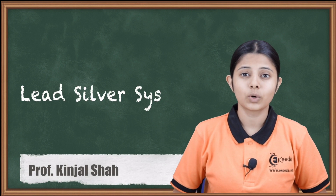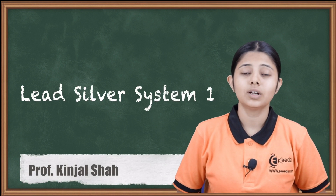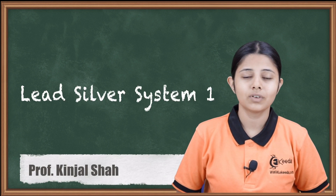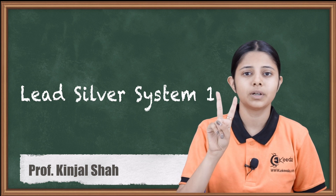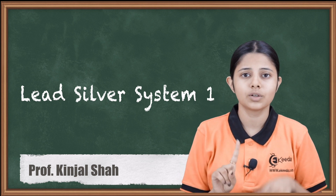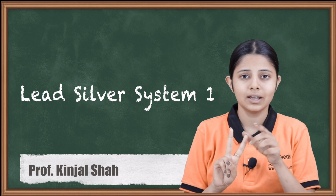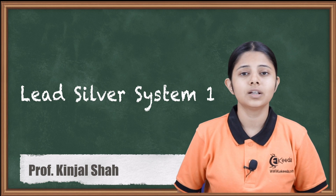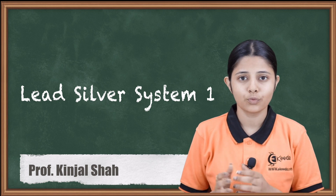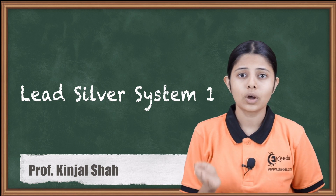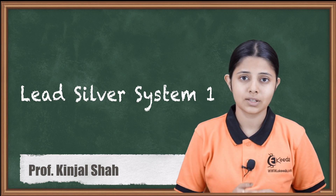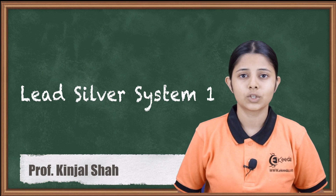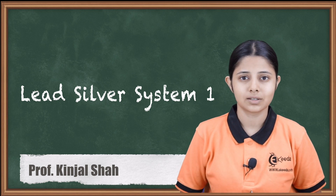Hello friends. In today's session we are going to study about a lead-silver system. A lead-silver system is a two-component system made up of two components — the first is lead and the second is silver. We will study the different phases of it, how components and phases affect the degrees of freedom, and we will apply the phase rule to the entire system.